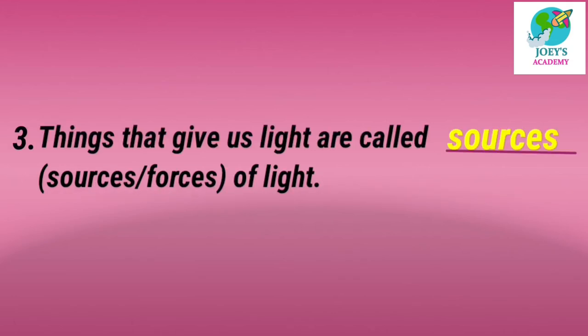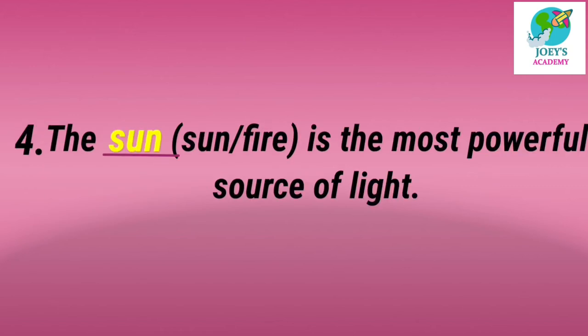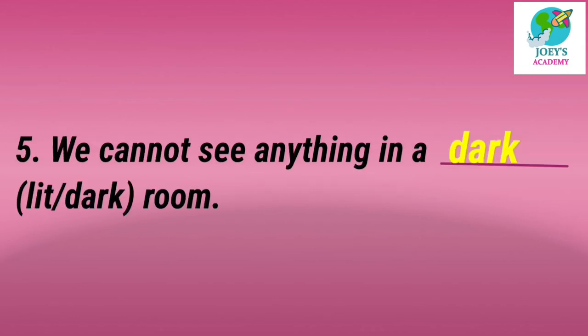Third: things that give us light are called ___. Options: sources or forces of light. Answer is sources — things that give us light are called sources of light. Fourth: the ___ is the most powerful source of light. Options: sun or fire. Answer is sun — the sun is the most powerful source of light. Fifth: we cannot see anything in a ___. Options: lit or dark room. Answer is dark — we cannot see anything in a dark room.